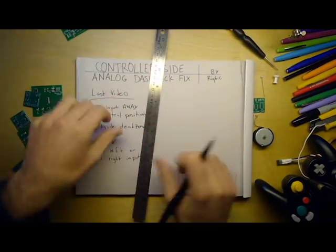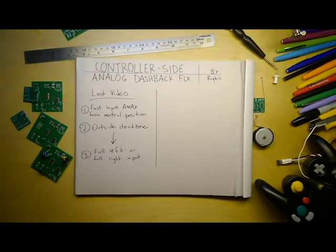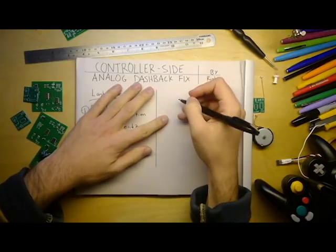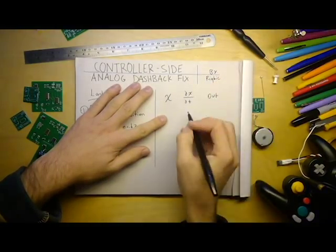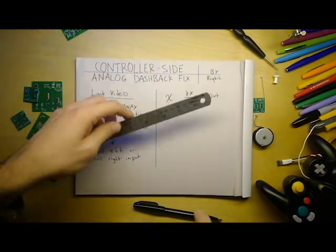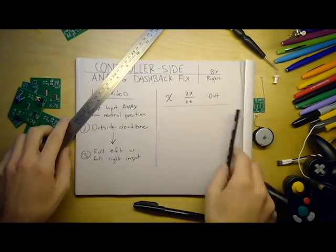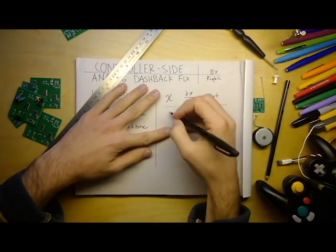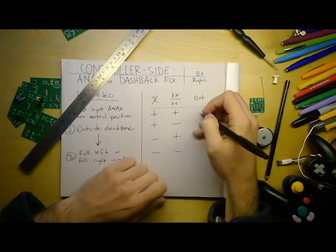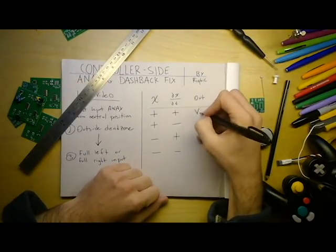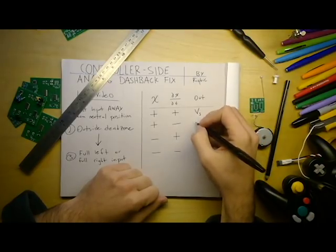The crucial information here is the position of the stick and the velocity of the stick. Depending on whether these are positive or negative, we're going to either pass through our raw signal or select a full right or full left input. I denote a full right input as Vs, or the supply voltage, and a full left input as 0 volts. I also write the velocity as dx/dt, or the derivative of the position. If that doesn't mean anything to you, then just keep thinking about it as the velocity.